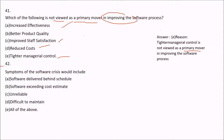Question 42: Symptoms of the software crisis would include software deliverables behind schedule (time overrun), cost overrun, unreliability, and being difficult to maintain. All of these are symptoms of the software crisis.